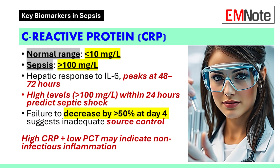C-reactive protein is an acute phase reactant produced by hepatocytes in response to interleukin-6. In healthy adults, its levels are typically less than 10 milligrams per liter. In severe sepsis, levels can exceed 100 milligrams per liter. C-reactive protein peaks at 48 to 72 hours after infection onset and has a half-life of 19 hours.